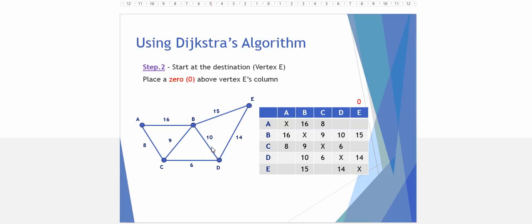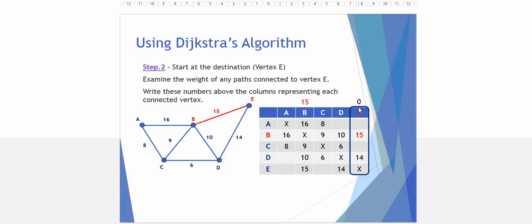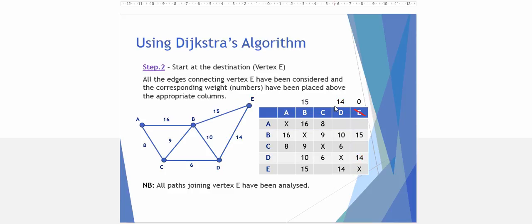Next step is to place a 0 above our end or destination E. We examine the edges that are connected to E. From E to B, it has a weighting of 15, so we place that number above column B. Likewise, from E to D there is a number 14, and we write the 14 above column D. That's the first step done.